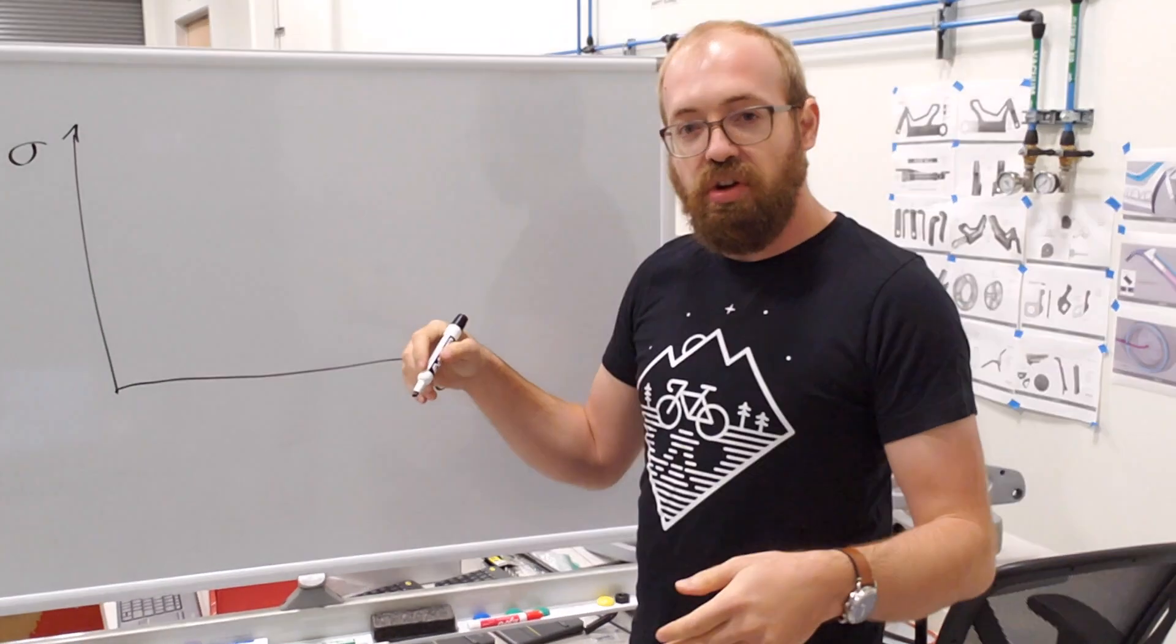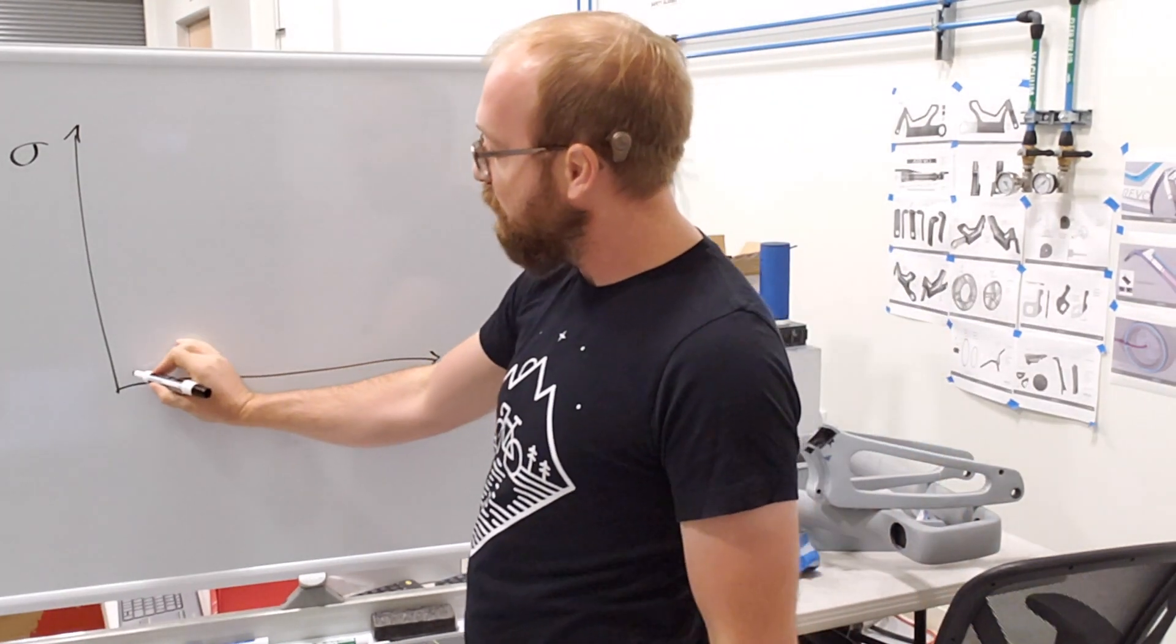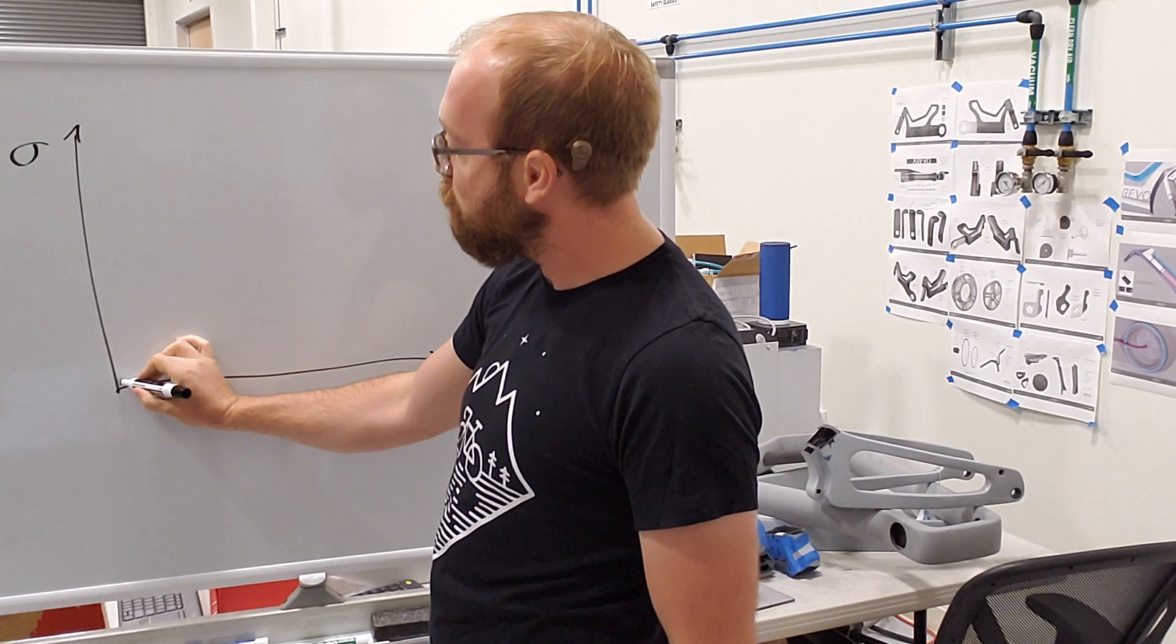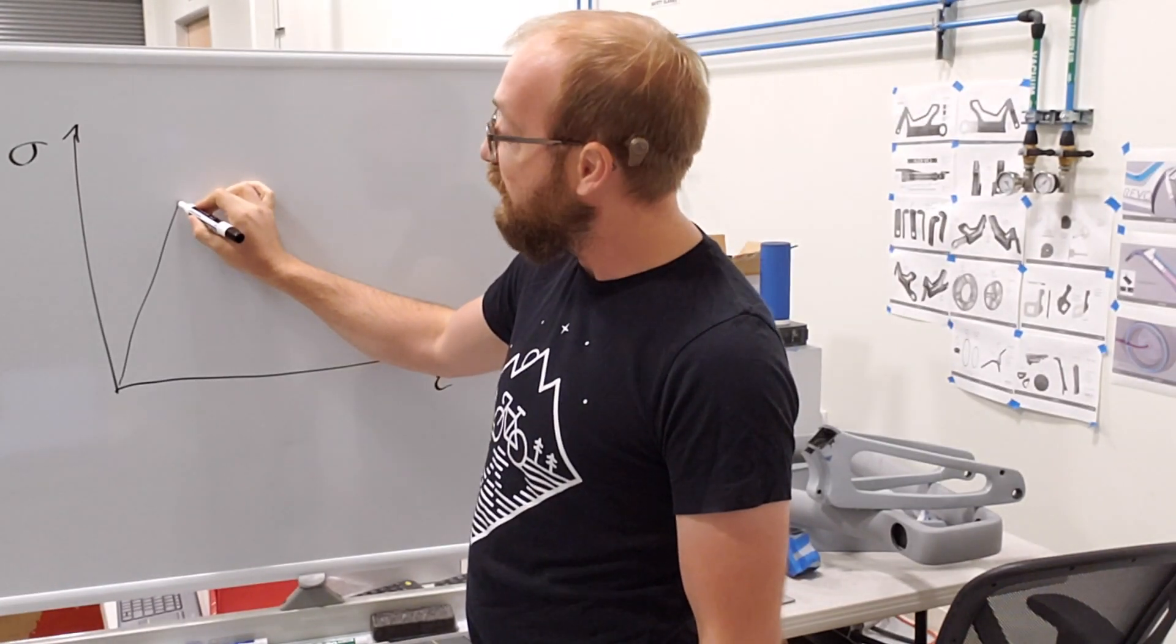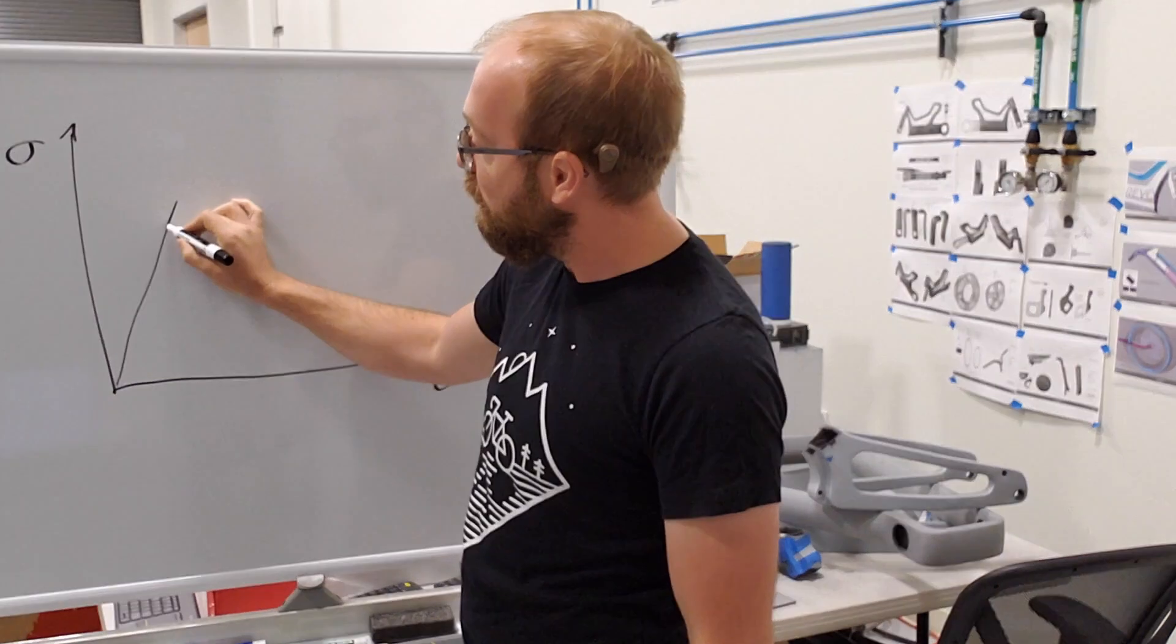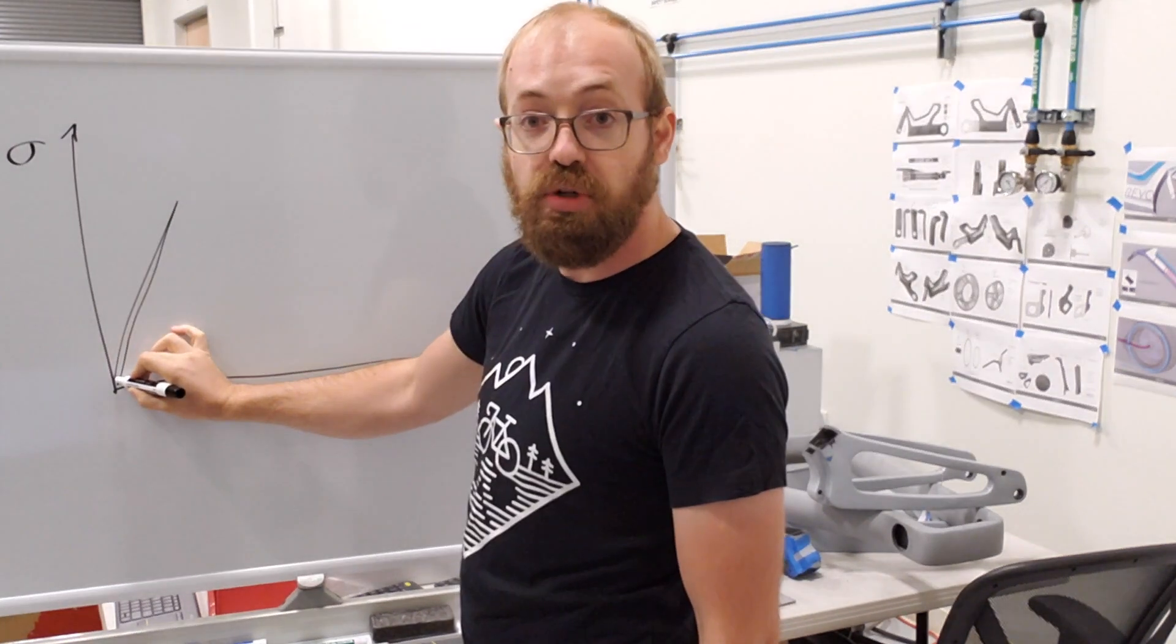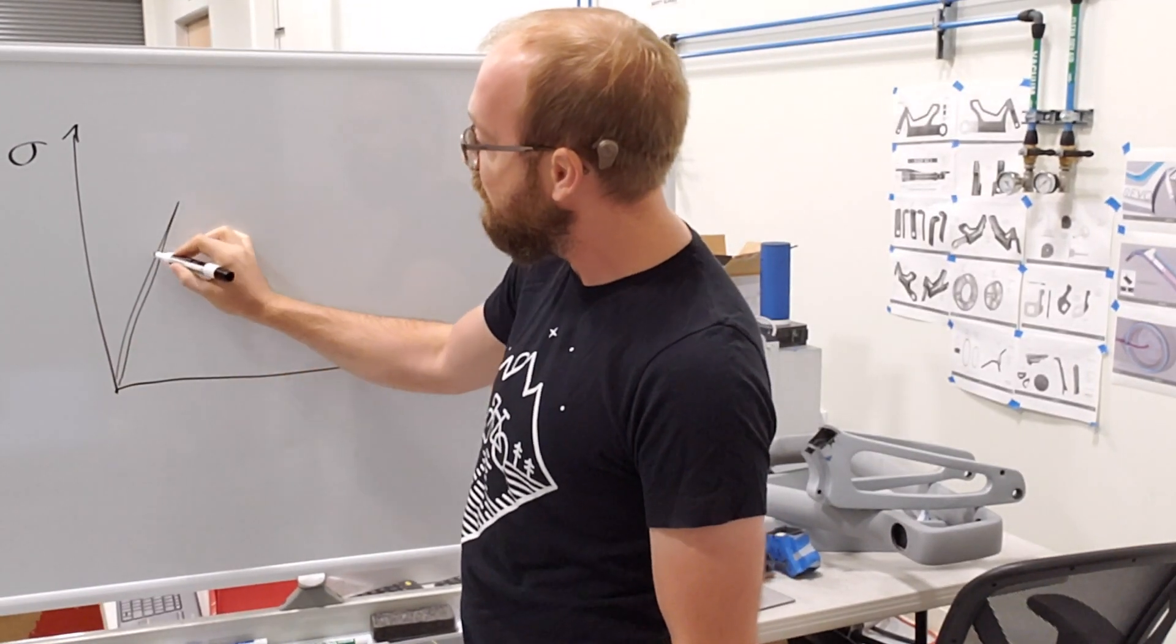If I were to show a ductile failure mode, I would say that first I would load up a structure, and it would have some linear part there. And we call that part the elastic region, where if I unload it, it goes right back down to where it was, no deformation. And that's where we really designed the structure to be.